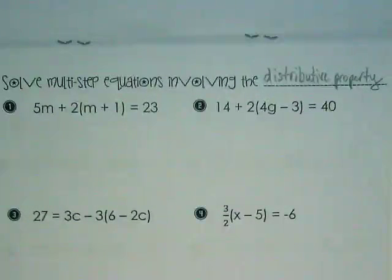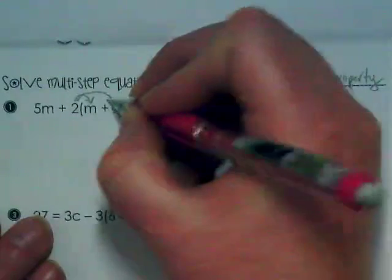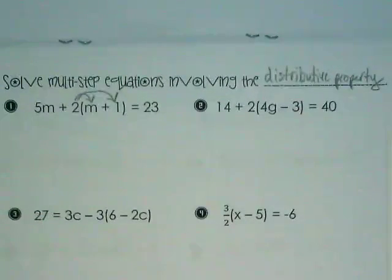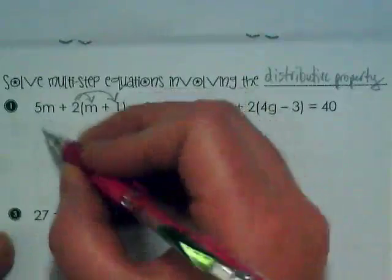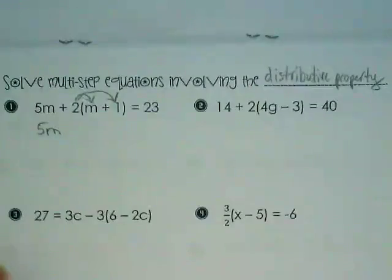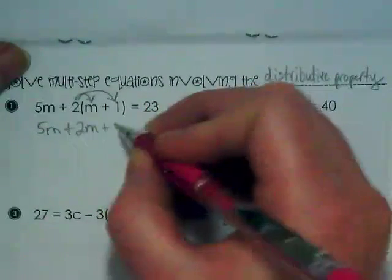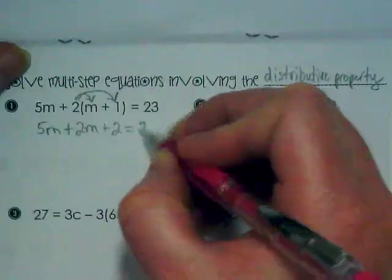In problem number one, what number are we distributing? 2. Again, you don't have to always draw these, but as we're working with them in the beginning, I'd like to see people doing that. 5m isn't being distributed. It's just being dropped down. 2 times m becomes 2m, plus 2 is equal to 23.